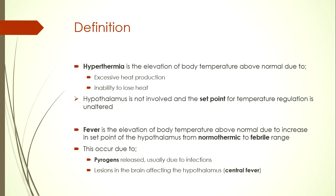Hyperthermia is the elevation of body temperature above normal due to excessive heat production or inability to lose heat. In this case, the hypothalamus, which is the mastermind behind control of body temperature, is not involved, and the set point at which it operates for control of body temperature is not changed.